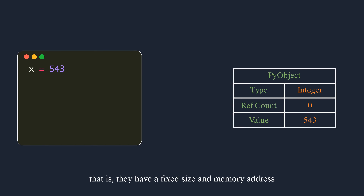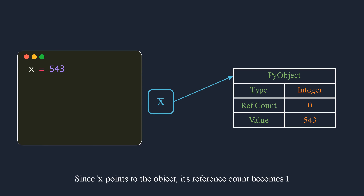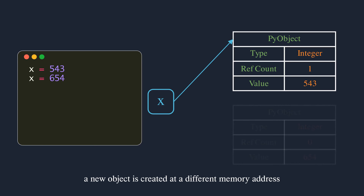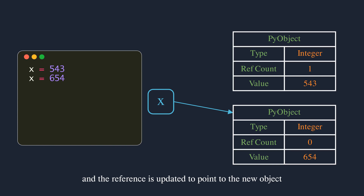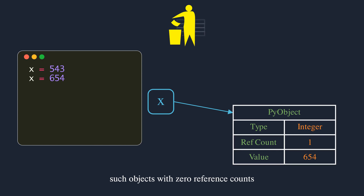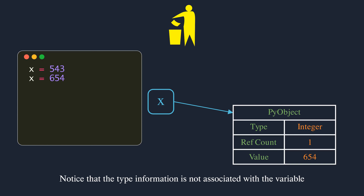Once created, these objects do not move around in memory — they have a fixed size and memory address. The variable name x is a reference to this object; since x points to the object, its reference count becomes one. When a new value is assigned to x, a new object is created at a different memory address and the reference is updated to point to the new object. The reference count of the new object becomes one and that of the old object becomes zero.